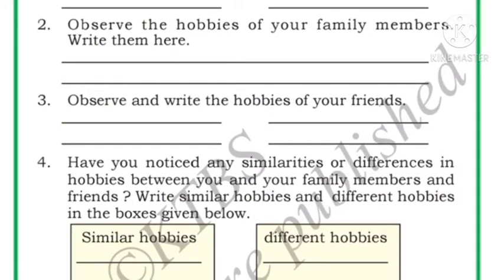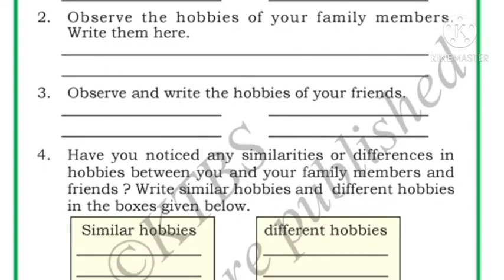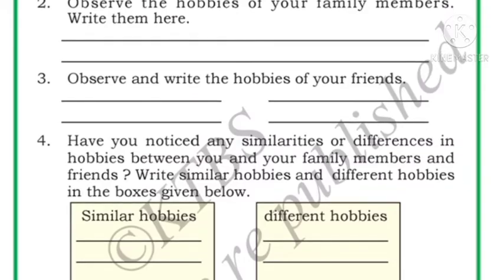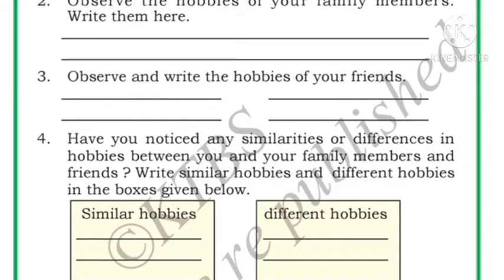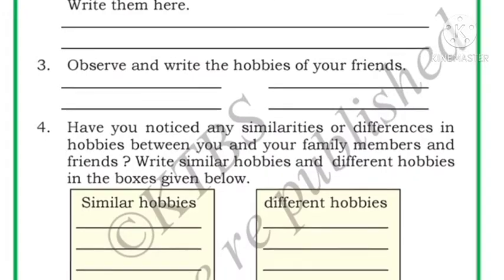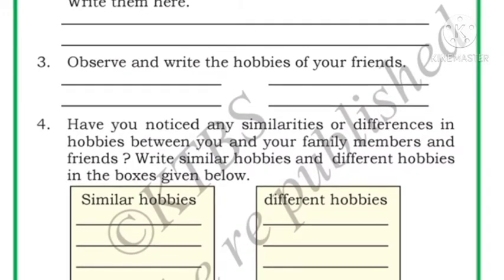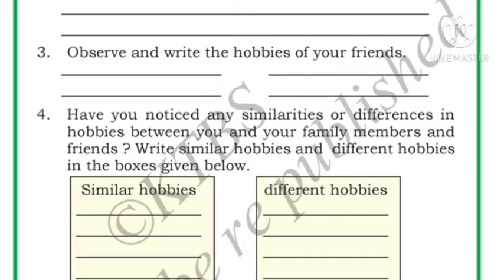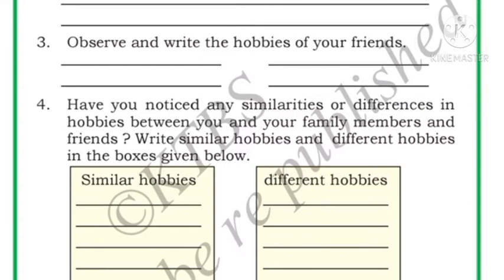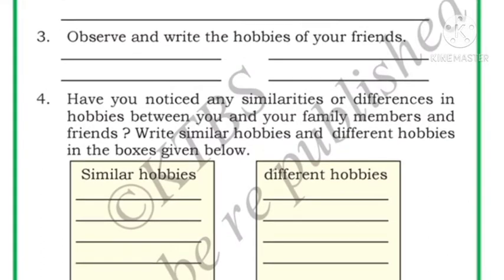What do you do in your free time? What are your hobbies? Everybody has different hobbies. You have to write here what you do in your free time. Observe the hobbies of your family members and write them here. Then observe and write the hobbies of your friends.